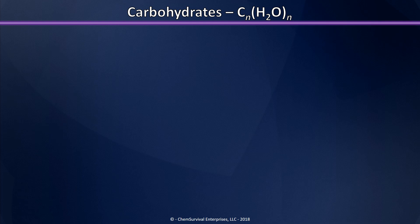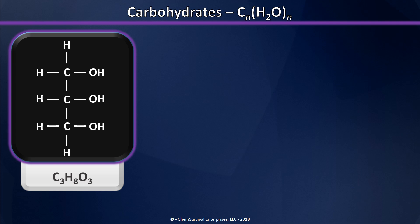To begin our discussion of the structure of carbohydrates, I'm going to do something you might not expect — I'm going to show you a molecule that's not a carbohydrate. Here it is. This is a molecule called glycerin or glycerol. Glycerin is a sugar alcohol, not a carbohydrate, because its formula is C3H8O3. There are too many hydrogens in this molecule for it to meet the definition of carbohydrate. A carbohydrate of this size would be C3H6O3.